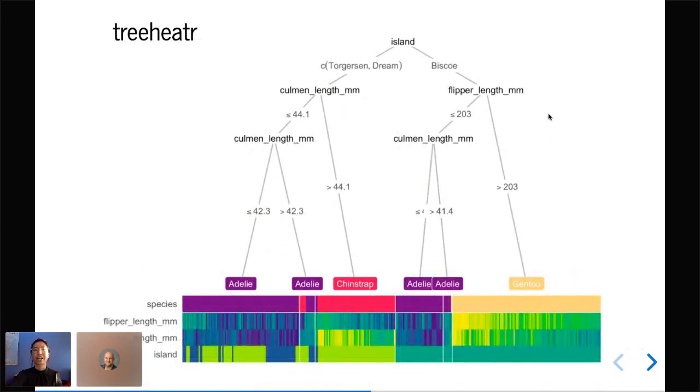So what's different in treeheatr? This is a decision tree model that is predicting the penguin species using everyone's most beloved Palmer penguins dataset. At the leaf node here, we see the heat map. On the rows, we have the features, and on each of the very thin columns you see here, it's a sample or a penguin. Some of the most important information from this visualization can be immediately seen. You can see immediately how big each of these leaf nodes are and where the misclassifications are. The gentoo penguins look like they in general have bigger flipper length and bigger bill, and they live in the Biscoe Island.